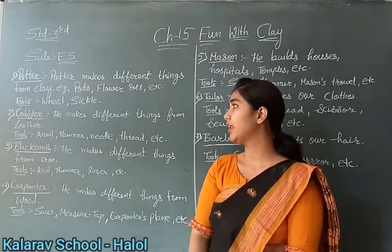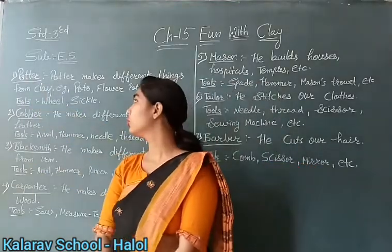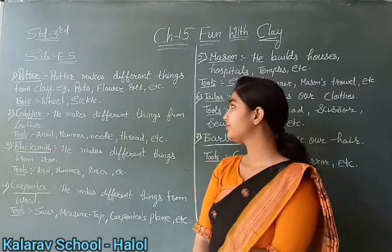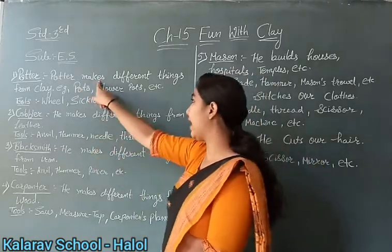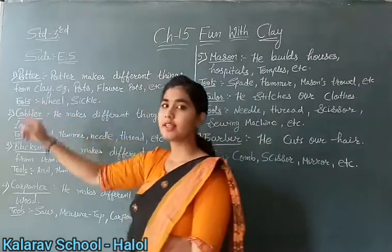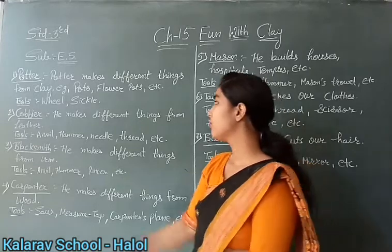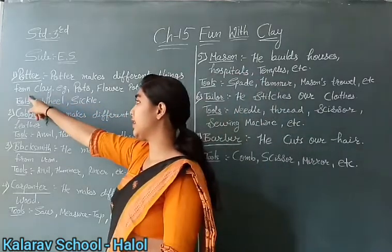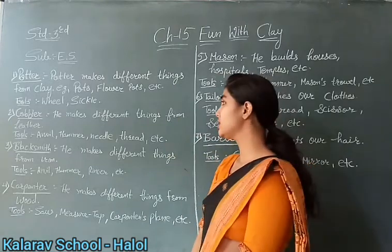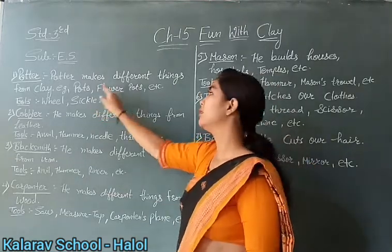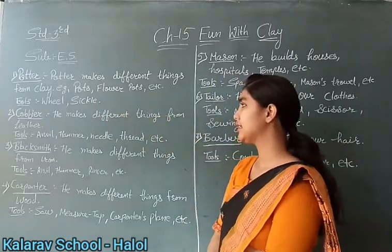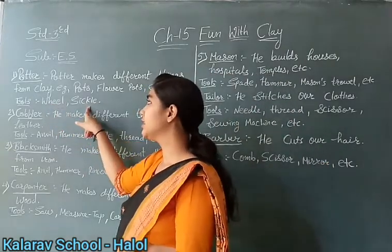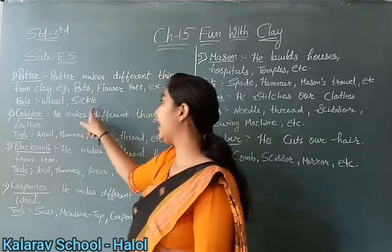So let's start. Number 1 is potter. Do you know who is potter? Potter makes different things from clay — pots, flower pots, etc. Those are the things he makes. And which tools does he use? Potter's wheel and sickle.